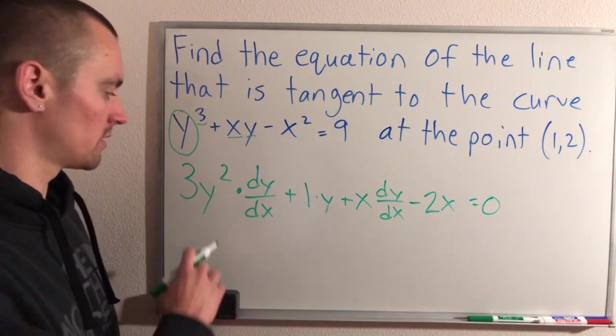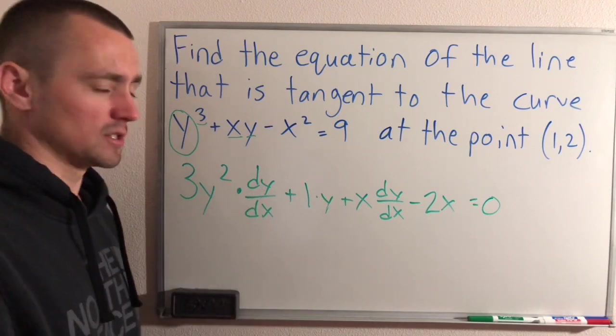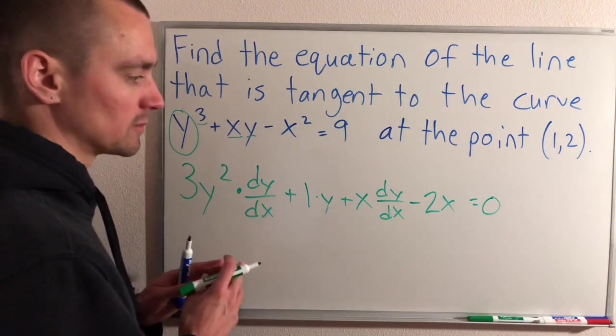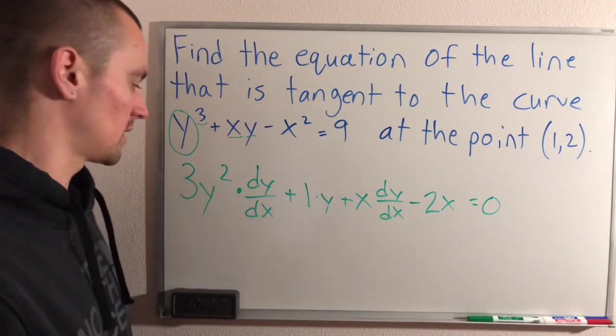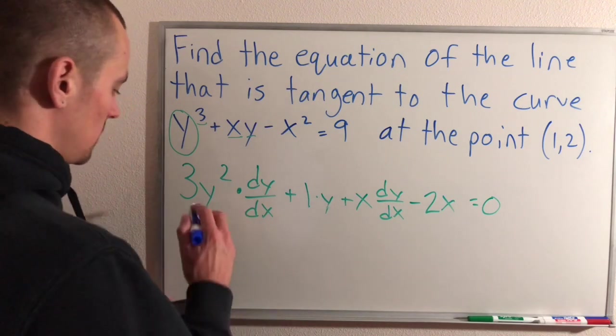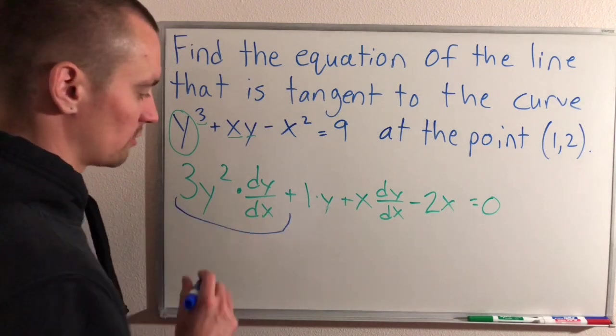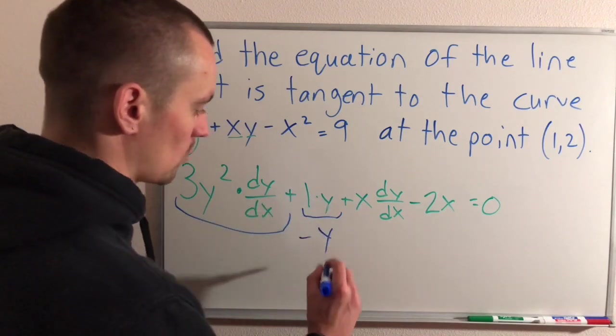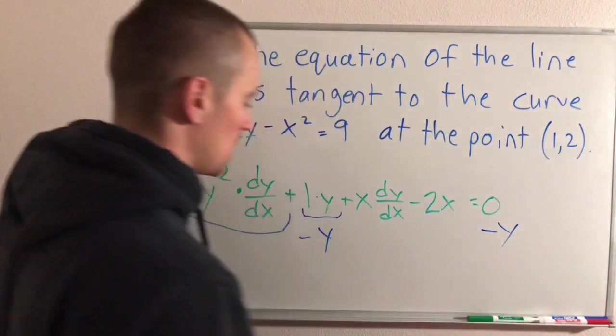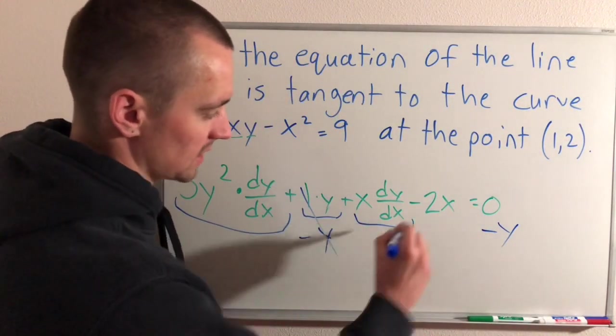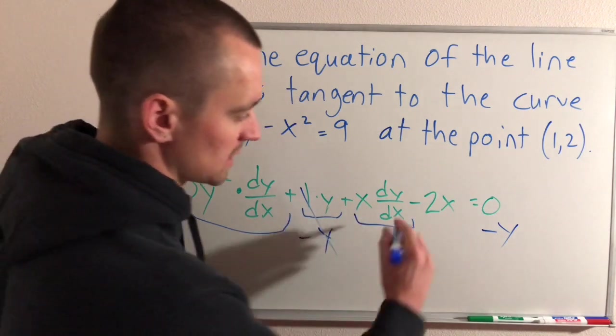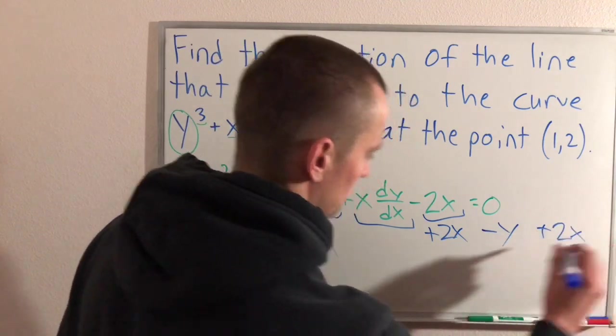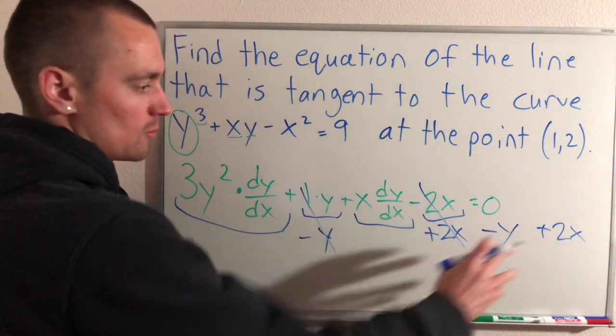So now we have this equation with x's, y's, and dy/dx. Just like I did in my implicit differentiation videos, what we want to do now is move all of our dy/dx terms to one side, and all of our non-dy/dx terms to the other side of the equation. So this term here has dy/dx. We'll leave it over on the left side. This term here does not have a dy/dx, so we'll subtract y over to the other side. This term here has a dy/dx, so we'll leave it on the left side. And then this term does not, so we'll add 2x to both sides, which will cancel on the left, and we'll move it over to the right.